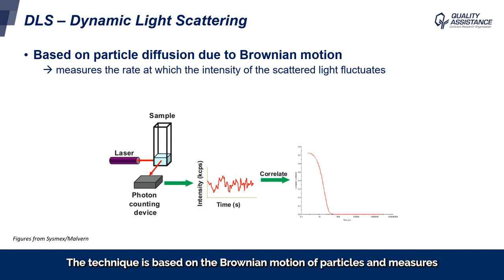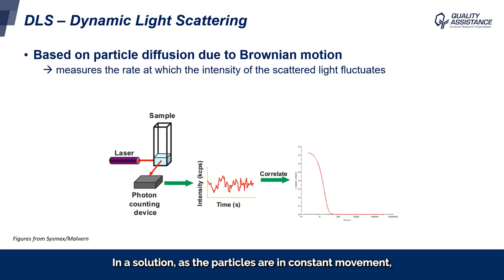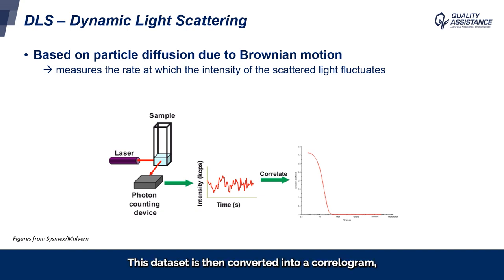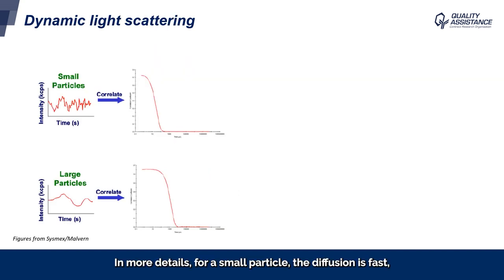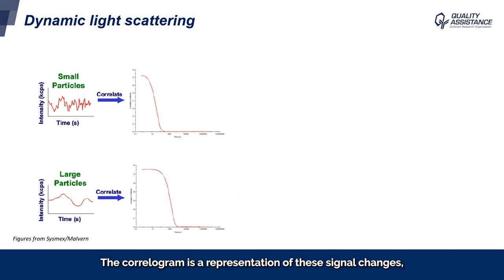The technique is based on the Brownian motion of particles, and measures the speed at which the particles are diffusing in the solvent. Particles in suspension are illuminated by a laser, and the particles will scatter some of the light that hits them. In a solution, as the particles are in constant movement, the light scattered by the particles is fluctuating over time — it is dynamic — and the light intensity as a function of time is what is measured. This data set is then converted into a correlogram, shown in the figure on the right of the slide. For a small particle, the diffusion is fast, which means more fluctuations of the intensity as a function of time than for a large particle moving rather slowly, as shown in the figures on the left.